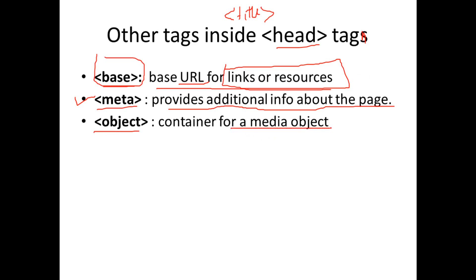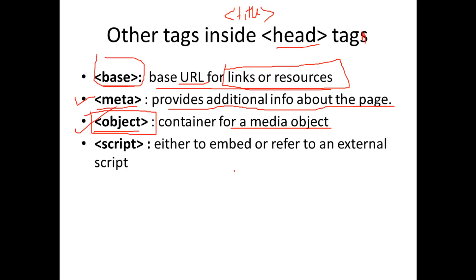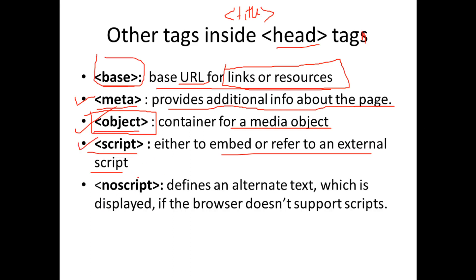When including a media file, we can specify it using the object tag — the object tag specifies media content. There is also the script tag, used to embed or refer to an external script. The noscript tag defines alternate text, which is displayed if the browser doesn't support scripts.